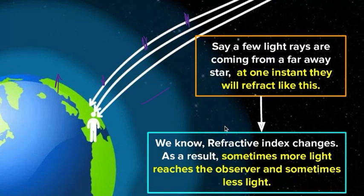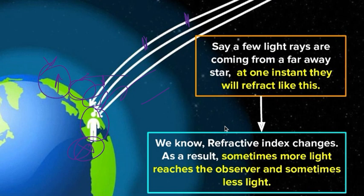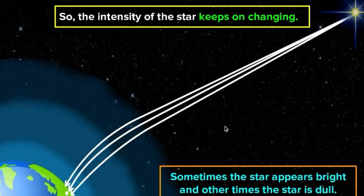As a result, sometimes more light will reach the observer and sometimes less light will reach. Let's say there is another person over here. So it's possible that he won't be able to see that brightly. Let's say this is person X and this is Y. X person has rays directly falling, so he can see the star more brightly. Whereas for Y, light rays are not coming that properly, so he sees a dull star. That's the concept - why the intensity of stars keeps on changing.